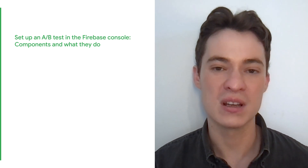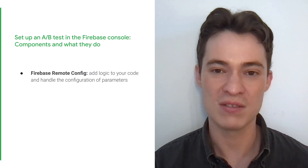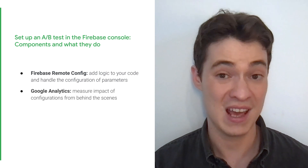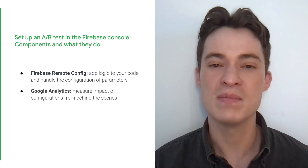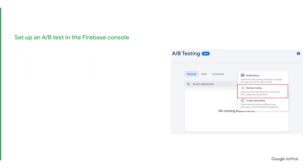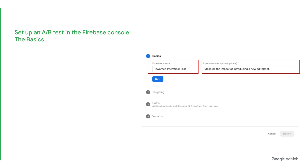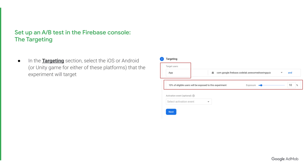You can define goals and configurable parameters for your test. There are two main features here. First, Firebase Remote Config — this is where you can add logic to your code and handle the configuration of the parameters. Next, Google Analytics — this is used to measure the impact of configurations from behind the scenes. To initiate a controlled test for a new ad format, start by navigating to the A/B testing section of the Firebase console. Click Create Experiment, then select Remote Config. Next, you need to set up the basics. In the Basic section, define the experiment name and experiment description.